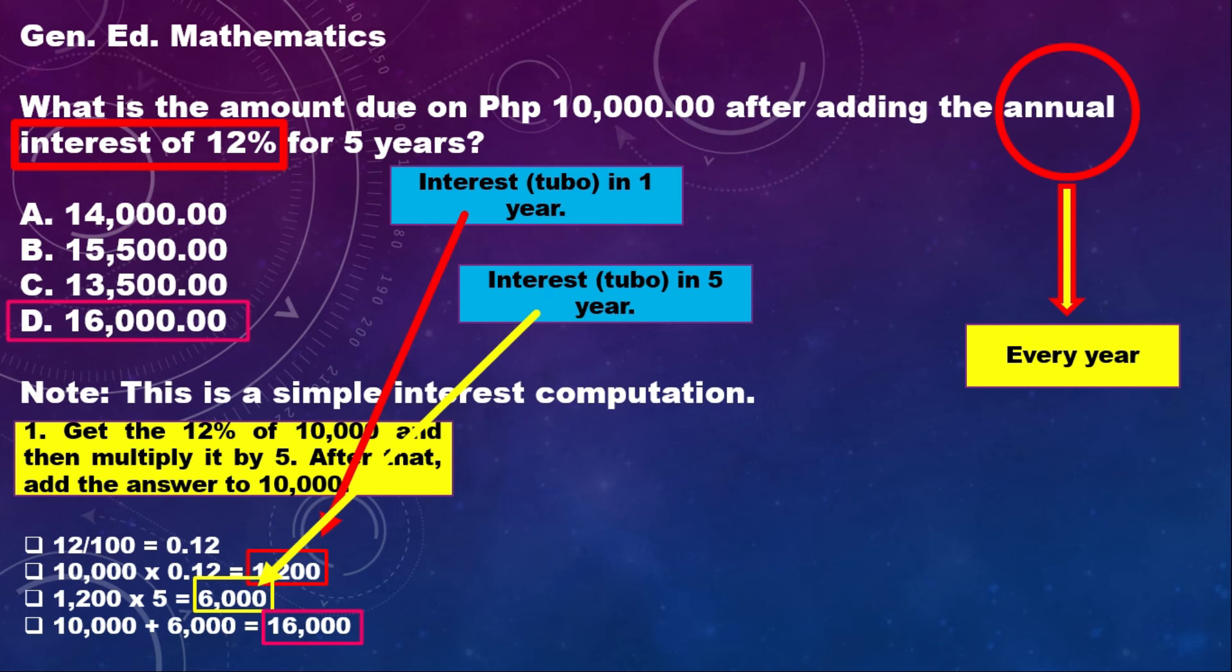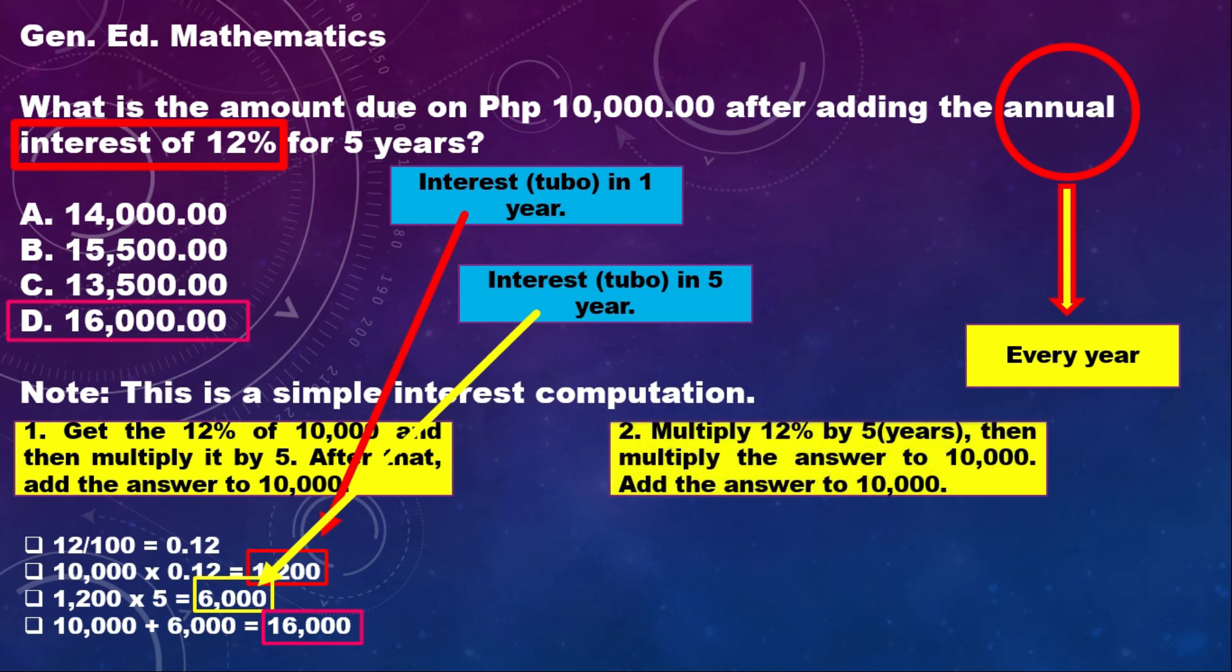The other way to compute this question is: I will multiply the 12% annual interest by 5, because it's 5 years. After that, I'll multiply it by 10,000 to get the 5 years interest of 10,000. After that, I'll add it to 10,000, and that is the final answer.